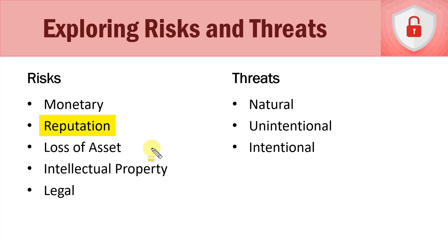Getting back to the Sony PlayStation hack, there was a data breach associated with that. Thinking about assets — an asset is a person, a property, or our data and information. If customer information or intellectual property rights were stolen, that's a loss of asset. A loss of asset risk could be a loss of life, damage to property, or the leaking, breaching, or stealing of personal, financial, or private information — or intellectual property for corporate espionage.